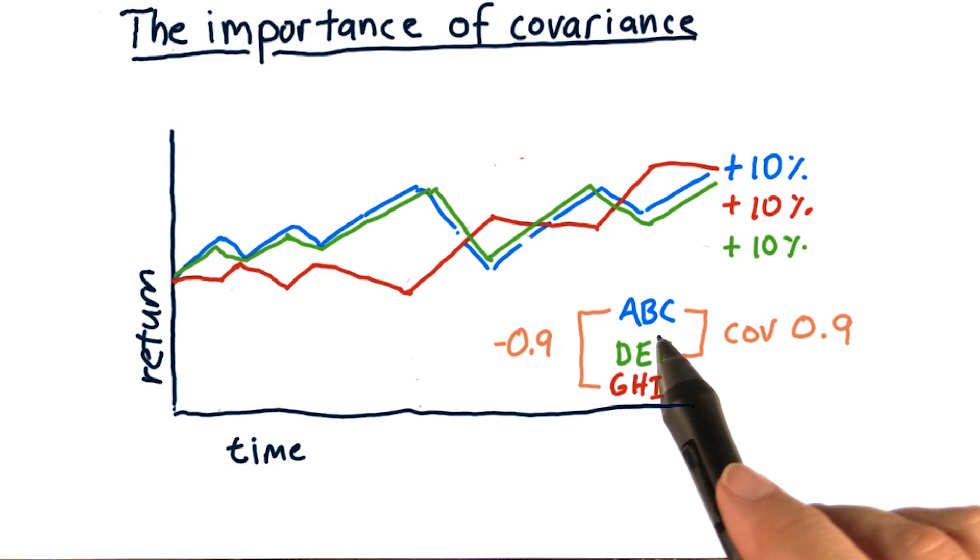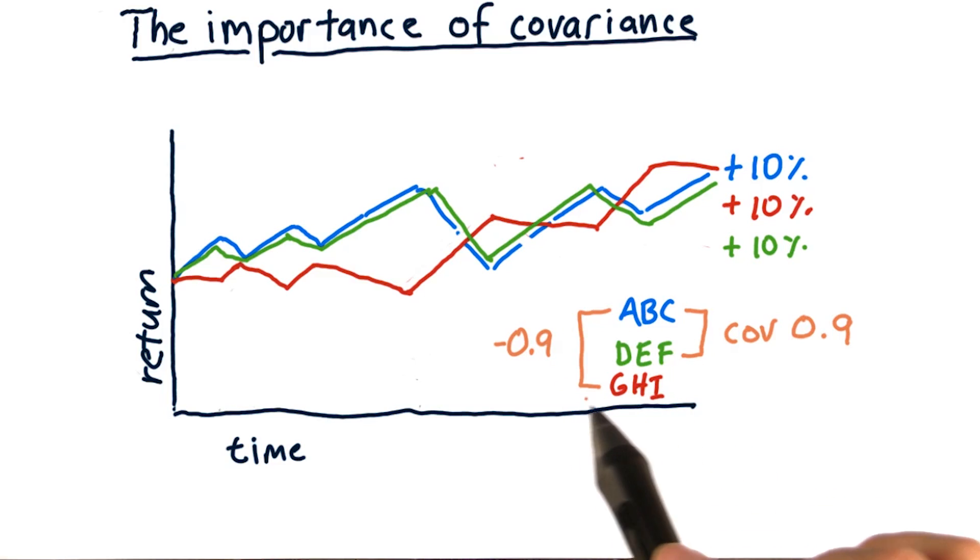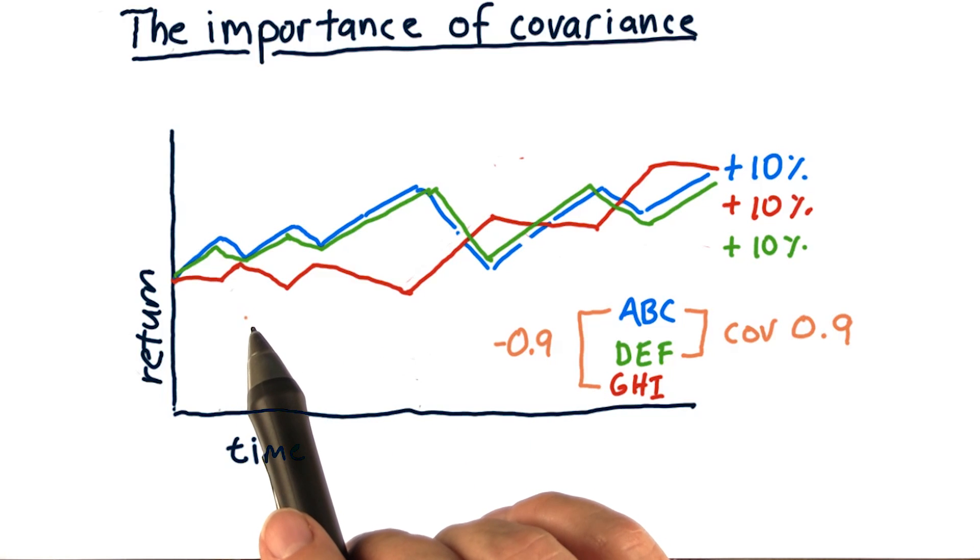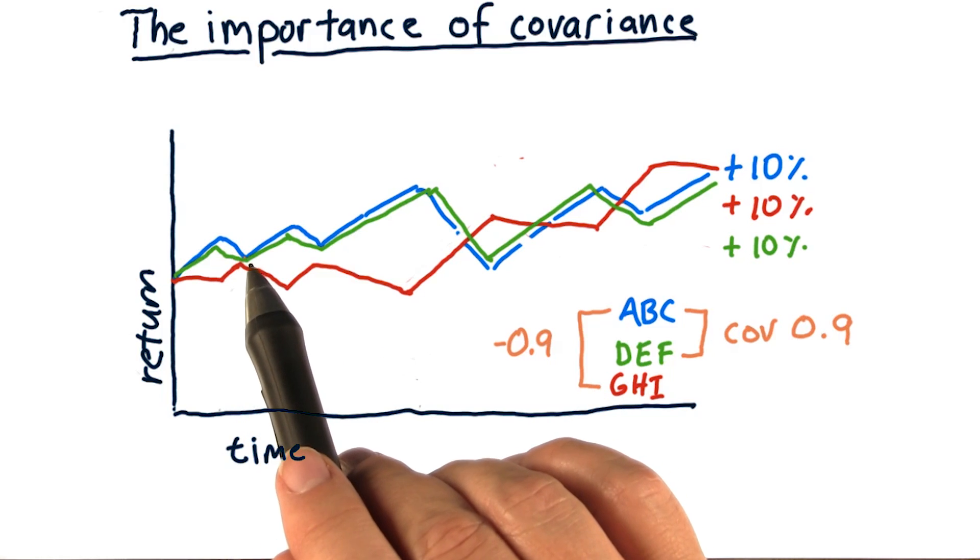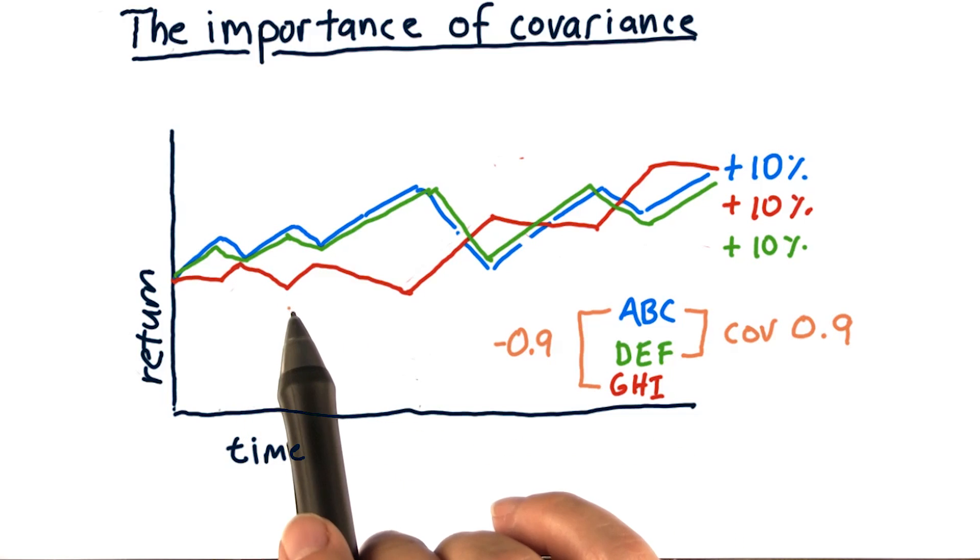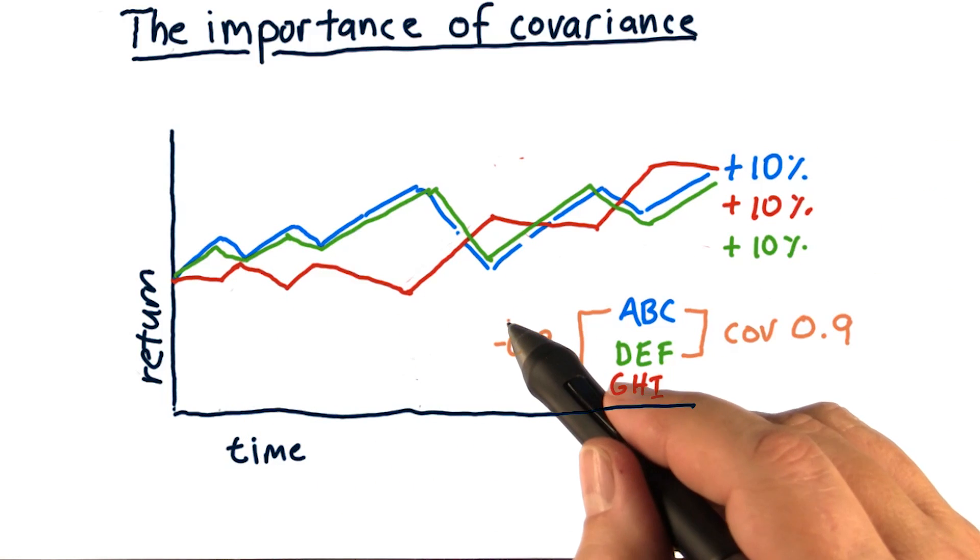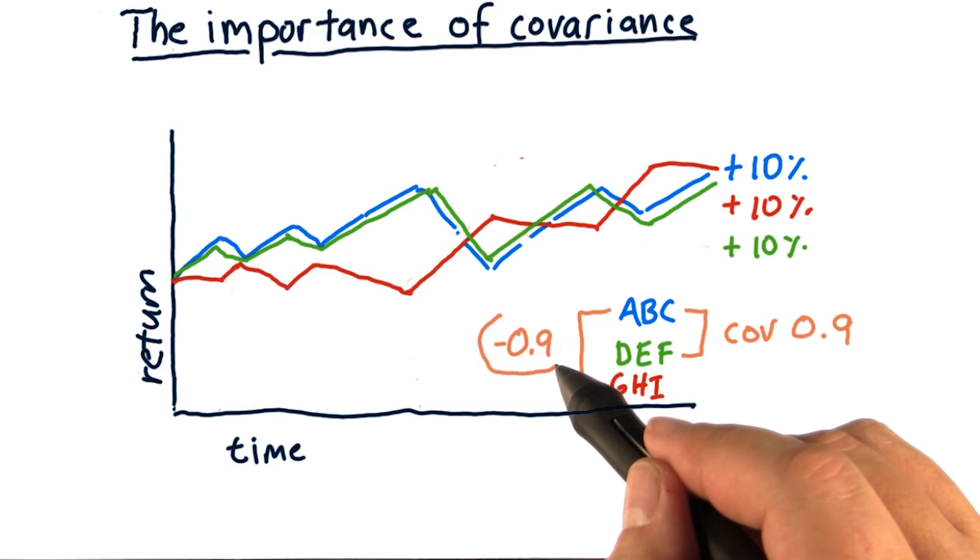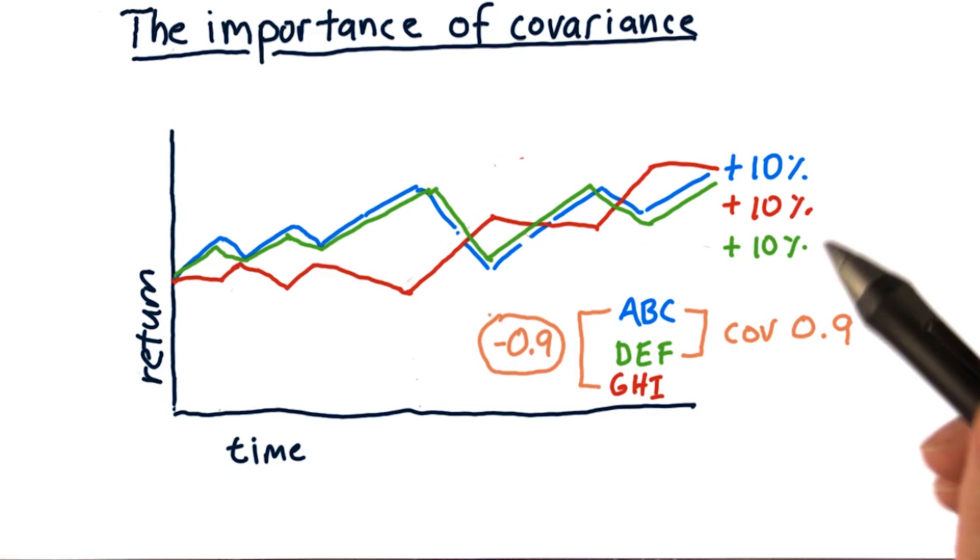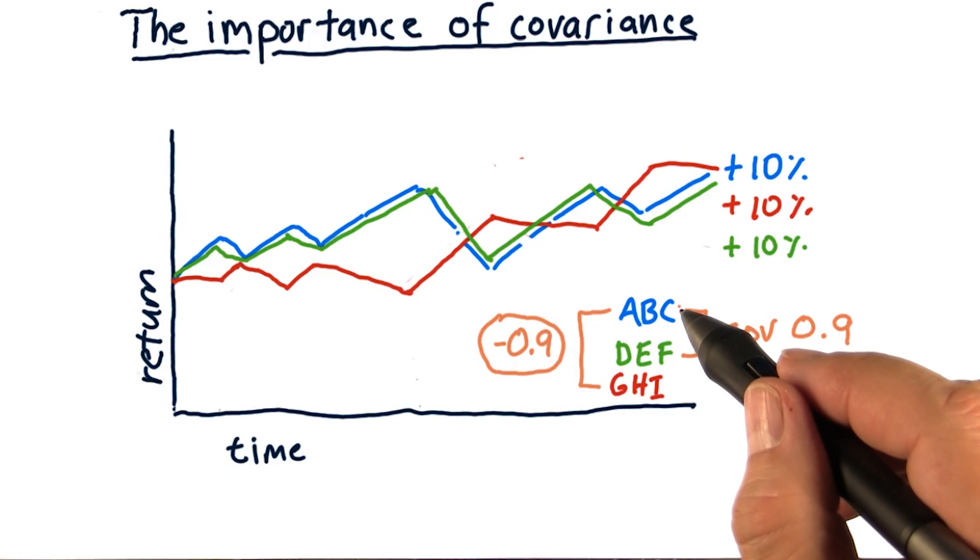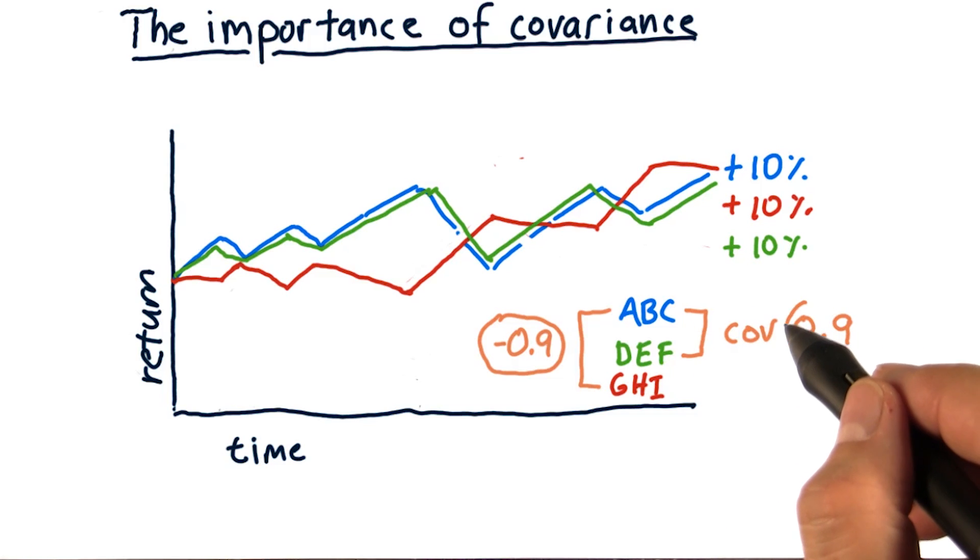Now if we were to look at the covariance of daily returns of ABC and GHI, we would find that they actually have a negative correlation. In other words, when ABC goes up, GHI tends to go down. So they actually have a negative correlation or a negative covariance, whereas ABC and DEF have a positive covariance.